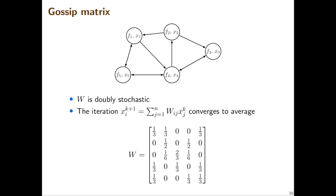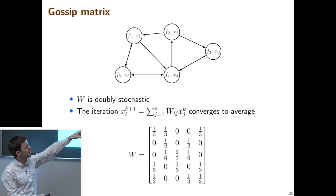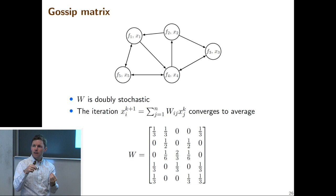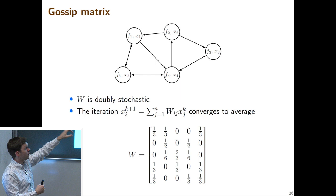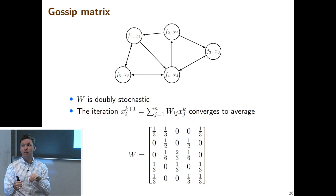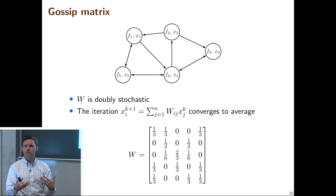A key tool is gossip matrices: doubly stochastic matrices with a sparsity pattern corresponding to the graph's adjacency matrix. If each agent repeatedly takes a weighted sum of its neighbors' values using a gossip matrix, everyone eventually converges to the average of all local values. The rows and columns sum to one, so the total sum is preserved through averaging steps. This process is like diffusion and achieves consensus.